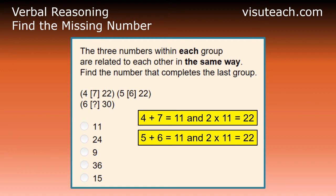So, looking at the third group of numbers, we need to find the number which when added to 6, gives the number that is half of 30. That is, gives the number 15.